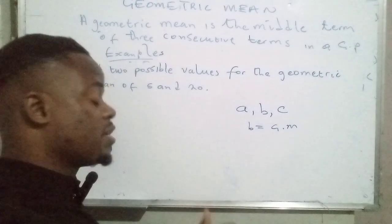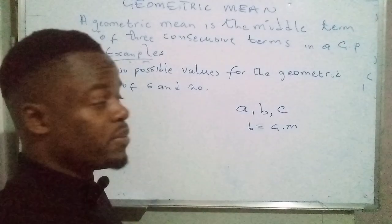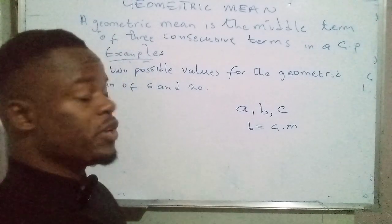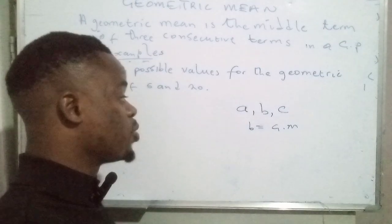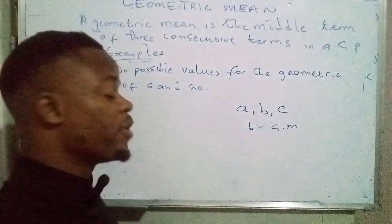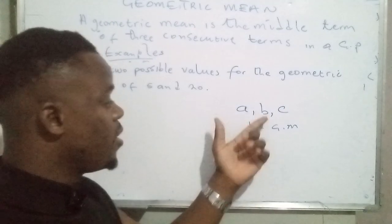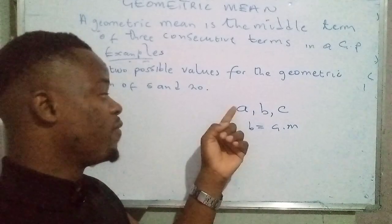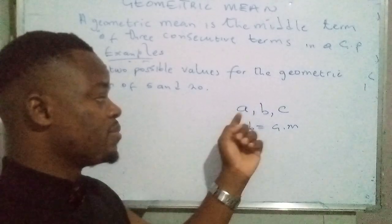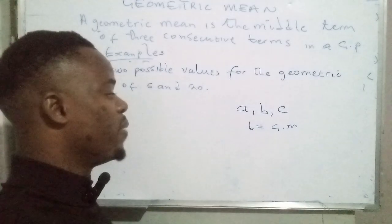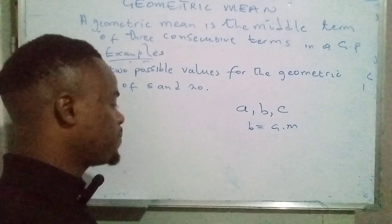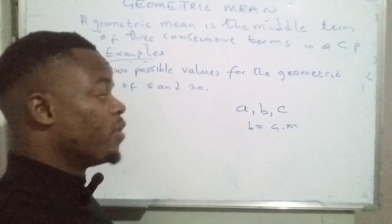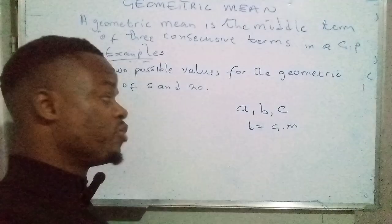Now in a case where its value hasn't been given, how would you determine this geometric mean? That's what we are here to look at — how you can determine the value of the geometric mean if the values of the two outer terms have been given. Remember when you are resolving the common ratio of a geometric progression: